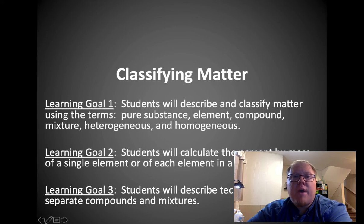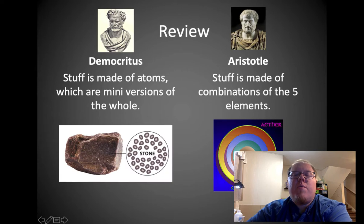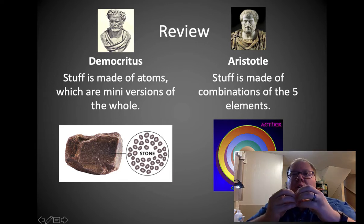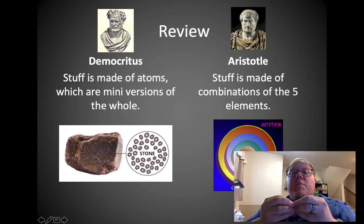Today we're going to talk about classifying matter. Before we begin, I want to review a few things from the last video. Democritus and Aristotle. Democritus thought that stuff was made out of atoms, little mini versions of the whole. Aristotle thought stuff was made of combinations of five elements: earth, water, air, fire, and ether. Both philosophers from 2,000 years ago were sort of right but also sort of wrong.